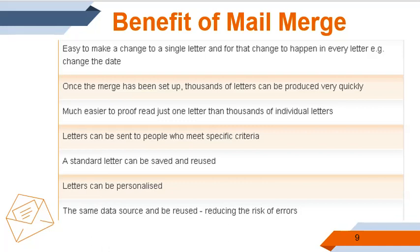These are the benefits of Mail Merge. It is easy to make a change to a single letter and have that change happen in every letter — for example, changing the date. Once the merge has been set up, thousands of letters can be produced very quickly. It is much easier to proofread just one letter than thousands of individual letters. Letters can be sent to people who meet specific criteria. A standard letter can be saved and reused. Letters can be personalized. And the same data source can be reused, reducing the risk of errors.